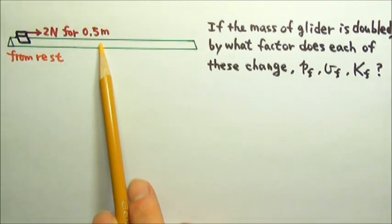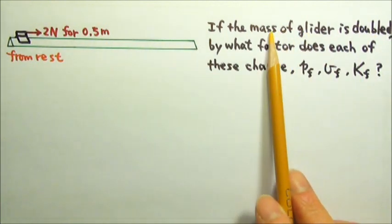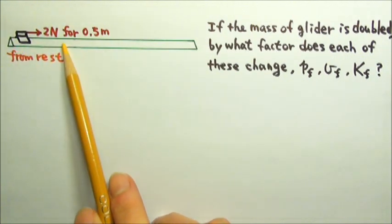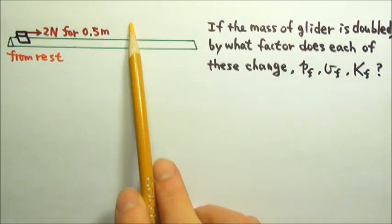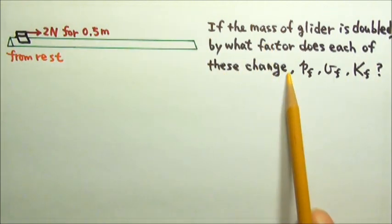If this process is repeated for another glider that has twice the mass, while the same horizontal 2N of force is exerted on the glider for 0.5 meters, by what factor does each of these change?